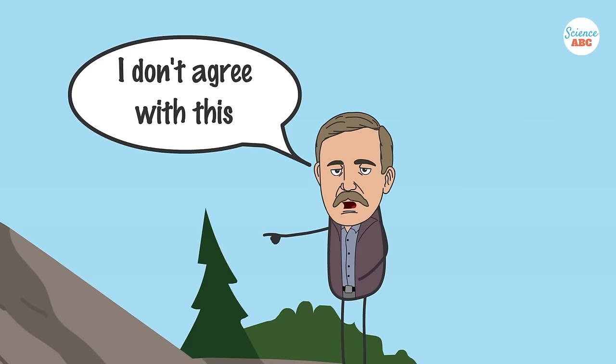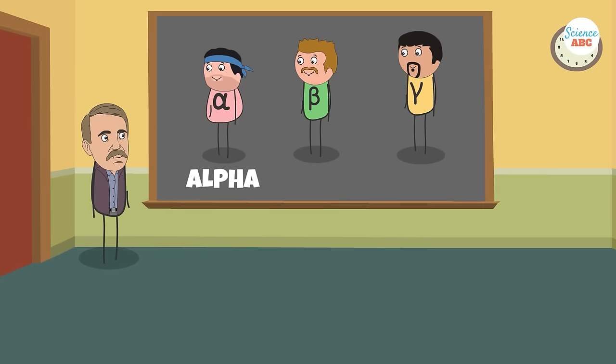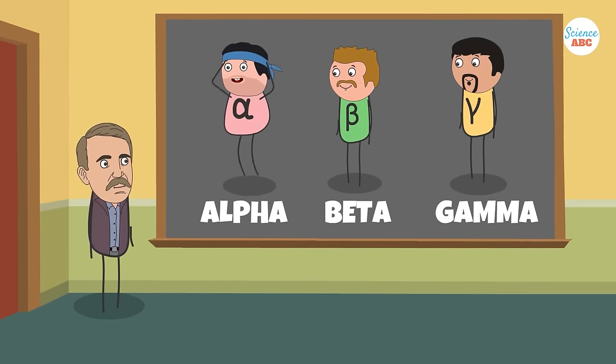It was the early 1900s, radioactivity was all the rage, and during his work on radioactive decay, Rutherford discovered alpha, beta, and gamma rays.